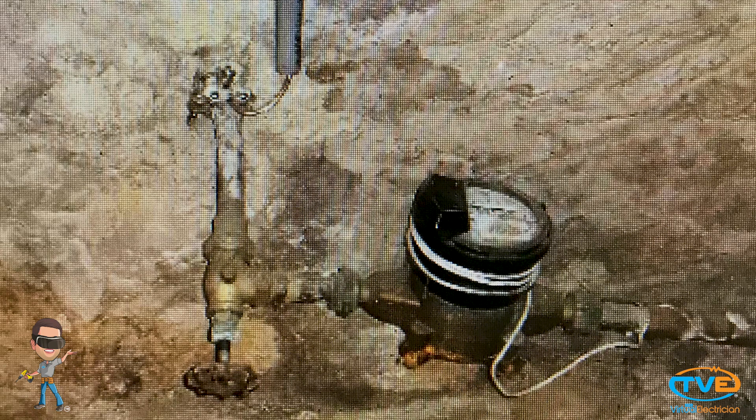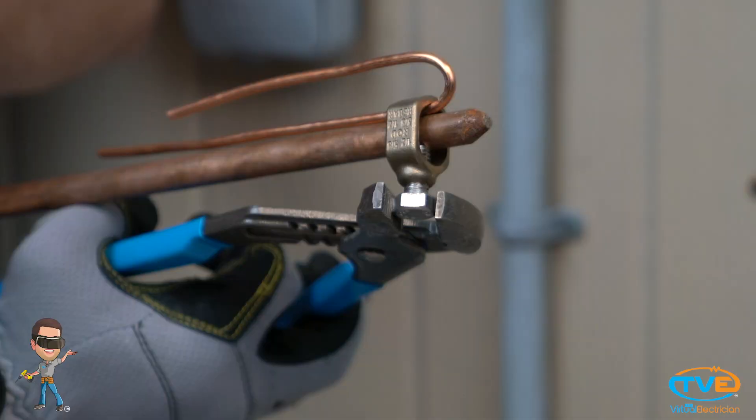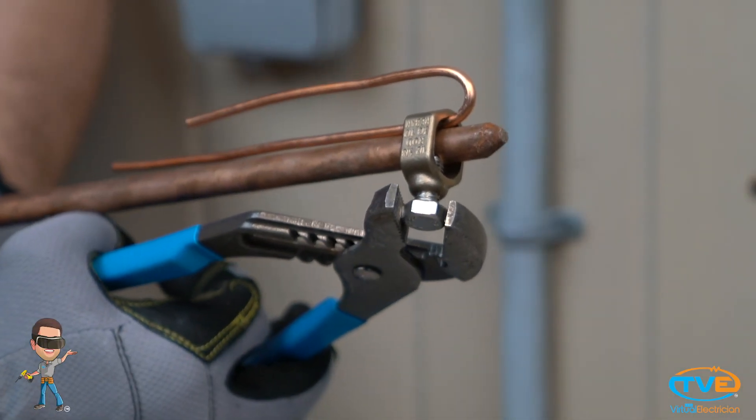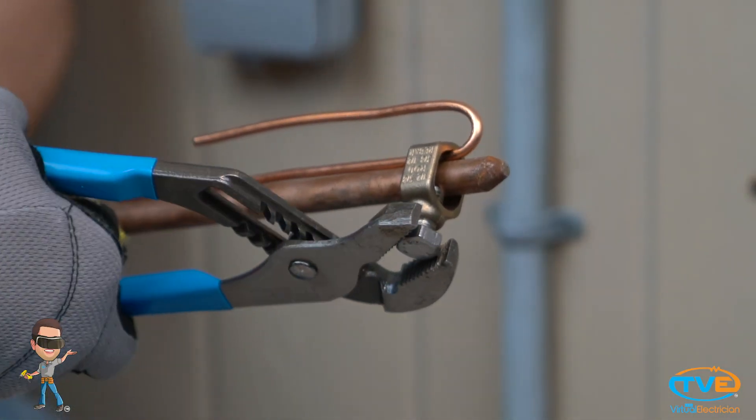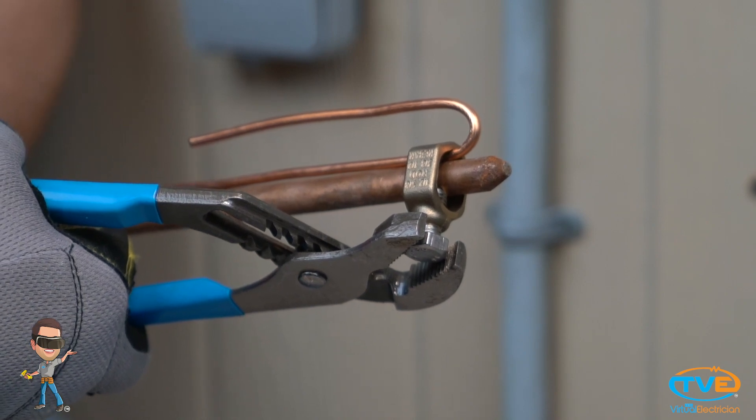First, you want to make sure your old panel is up to code. Make sure you have a ground and a supplemental ground. If you only have one means of ground at your panel, you will need to add a ground rod outside to get your supplemental ground. If you have two grounds, you can move on to the next step.